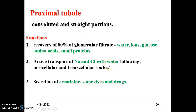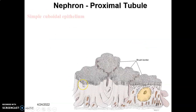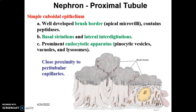There is also active transport of sodium and chloride, with water following via pericellular and transcellular routes. There is secretion of creatinine and some dyes or drugs from the blood. The epithelial lining of the proximal tubule is simple cuboidal epithelium with microvilli on the apices of the epithelial cells, giving it a brush border appearance. The cells also have basal striations and lateral interdigitations, which are characteristic of ion-transporting cells. The PCT cells have prominent endocytic apparatus such as pinocytic vesicles, vacuoles, and lysosomes, and they have close proximity to peritubular capillaries.